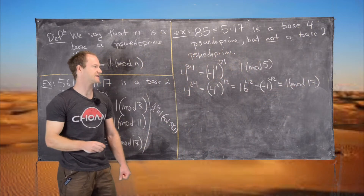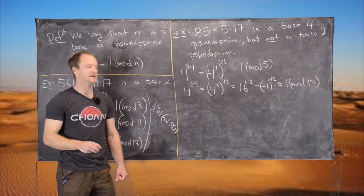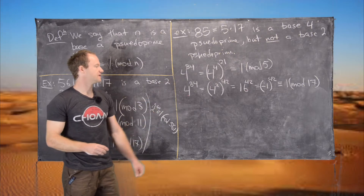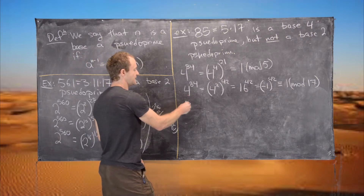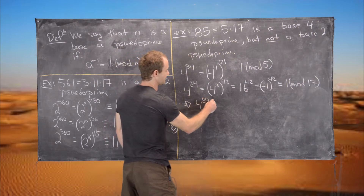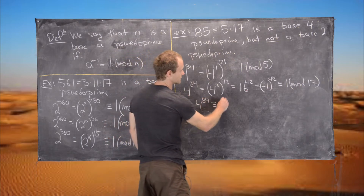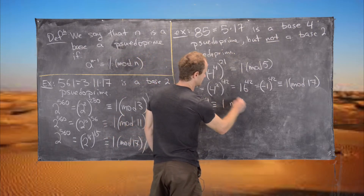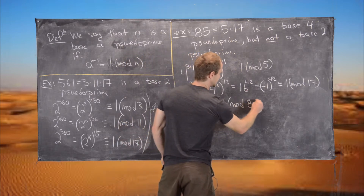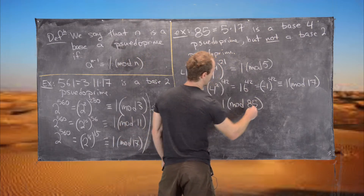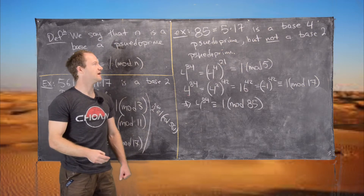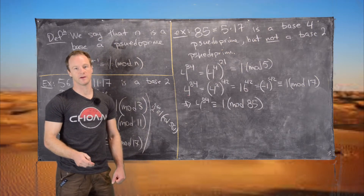There I used the fact that 16 is congruent to negative 1 mod 17. These two facts together tell us that 4 to the 84 is congruent to 1 mod the product of 5 and 17, which is 85. That means 85 is a base-4 pseudoprime.